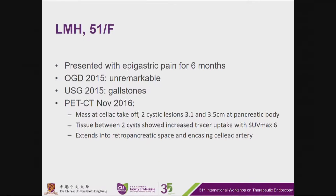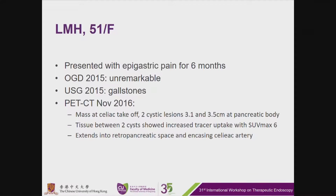A 51-year-old lady presented with epigastric pain for six months. OGD in 2015 showed an unremarkable study, and ultrasound in 2015 showed gallstones. However, PET CT in November this year showed a mass at the celiac takeoff with two cystic lesions of 3.1 and 3.5 cm at the pancreatic body. The tissue between the two cysts shows increased tracer uptake with SUV max 6, extending into the retroperitoneal pancreatic space and encasing the celiac artery.